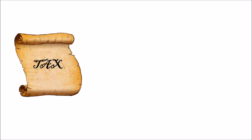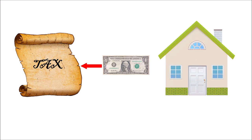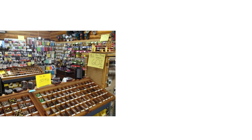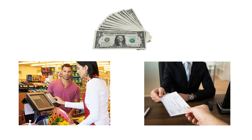It begins with a tax levied by the government, payable only in its own currency, such as the dollar. Think of a property tax, for example, where everyone with a house has to pay a tax or lose their property. This creates sellers of goods and services seeking dollars in exchange.